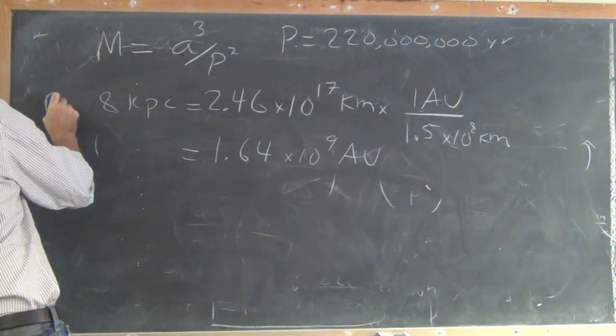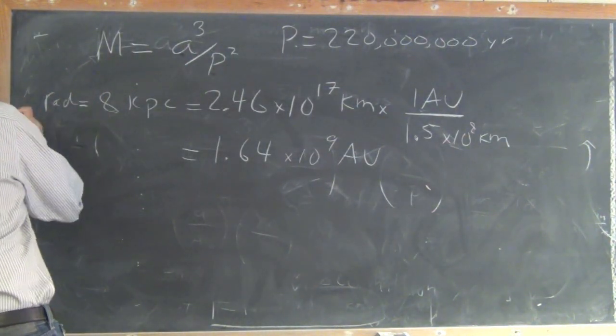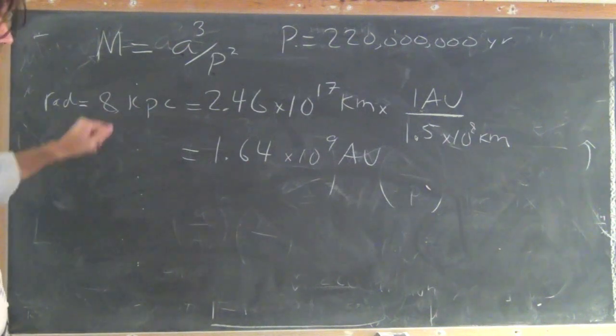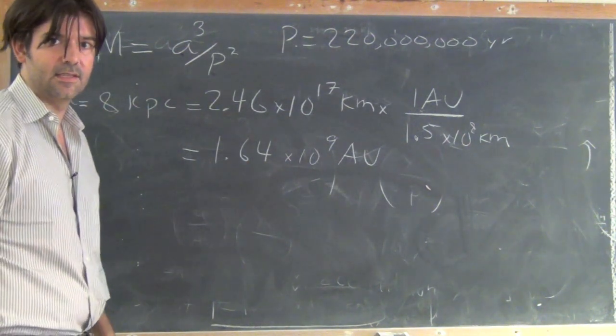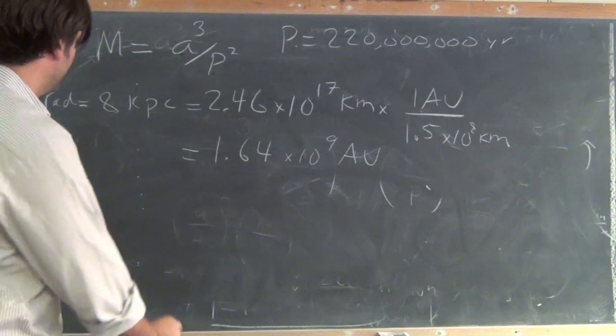This is the radius. And since this is circular orbit, the radius and the semi-major axis is the same thing, so I just need to plug in here.